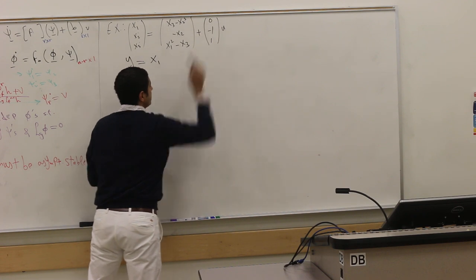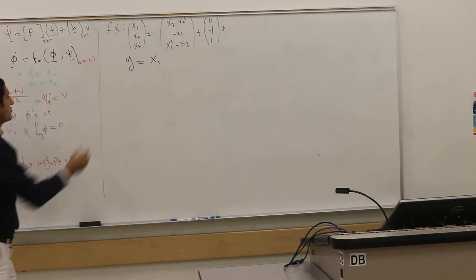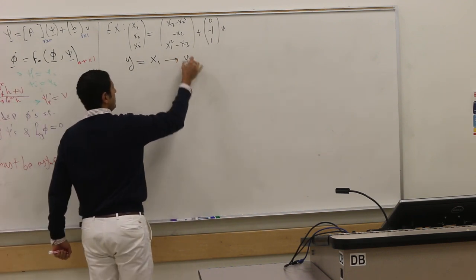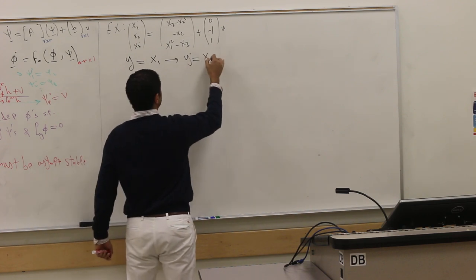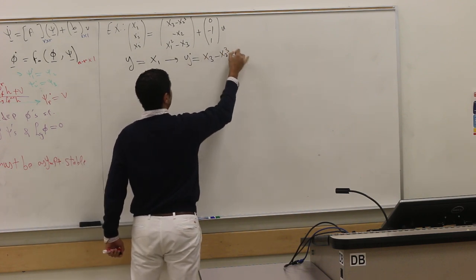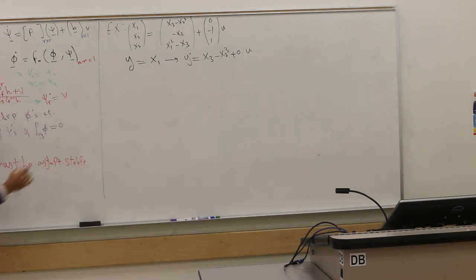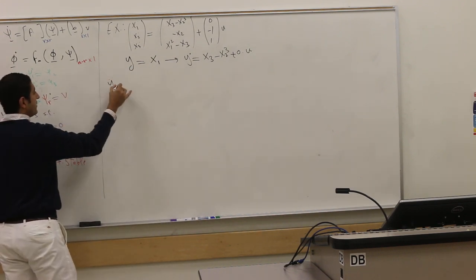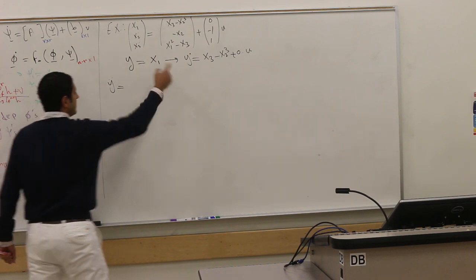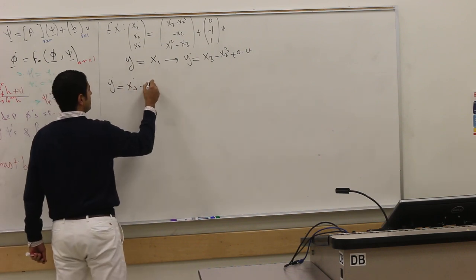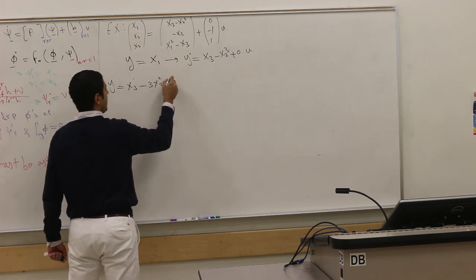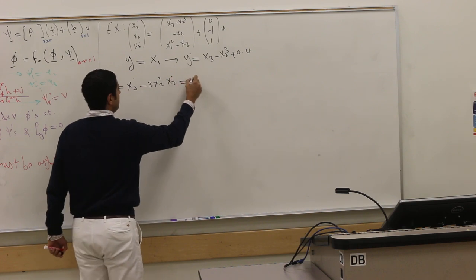Obviously it's not one because there's zero here. My y dot is x₃ minus x₂³ plus zero u, so it's not relative degree one for sure. I can differentiate again.